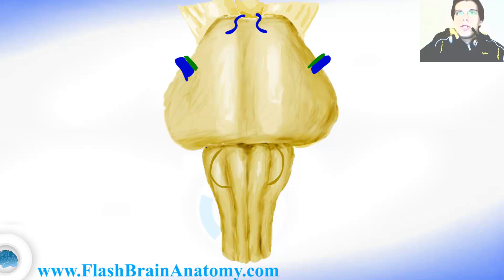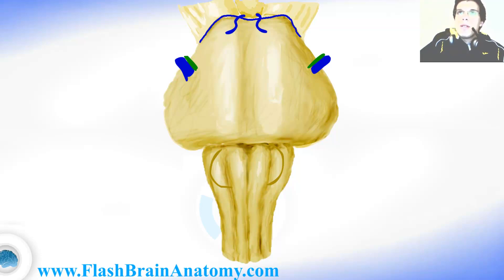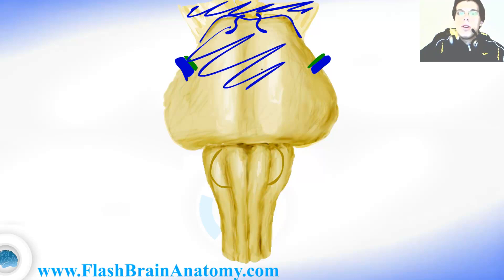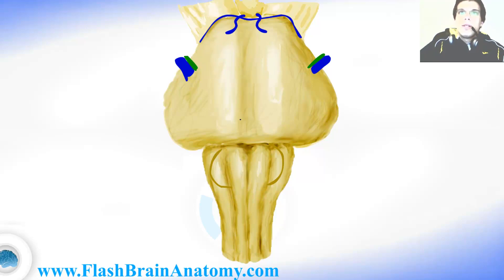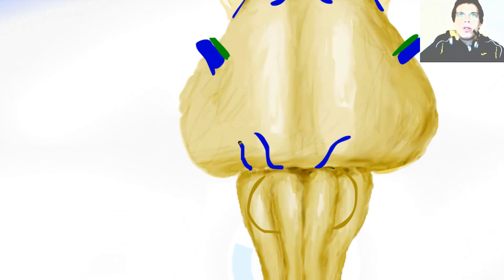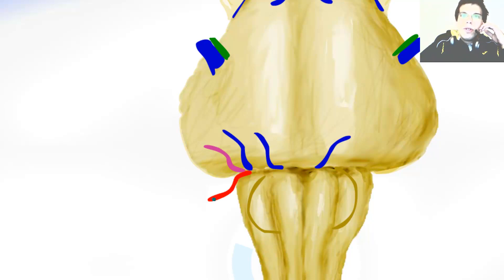As we said, this is the border between the pons and the medulla. This over here was the border between the mesencephalon — the midbrain up there — and the pons over here. Now from this border we have the abducens coming out. Then we have the facial nerve and the vestibulocochlear nerve and the glossopharyngeal nerve.